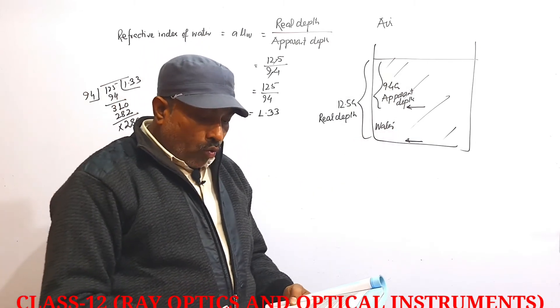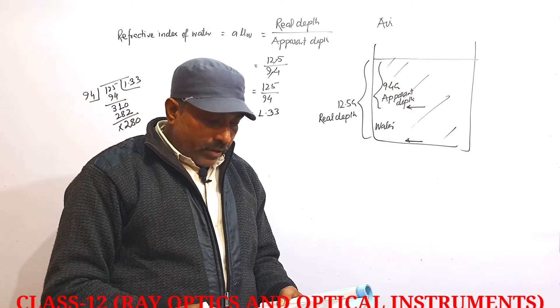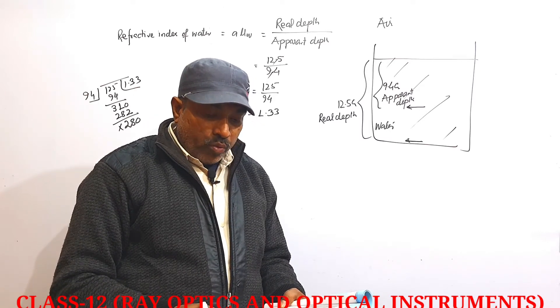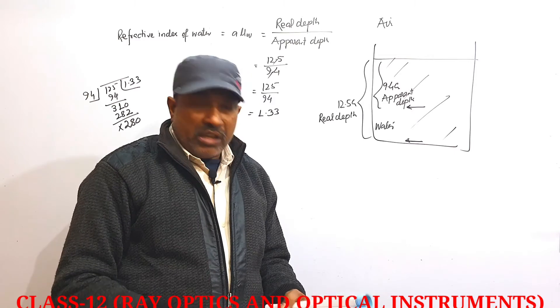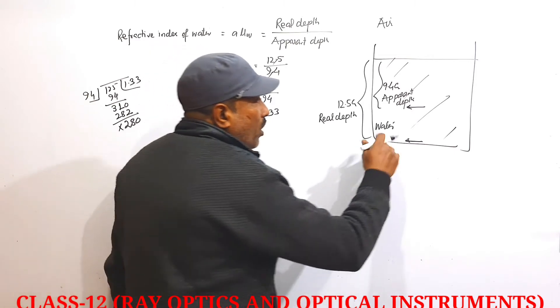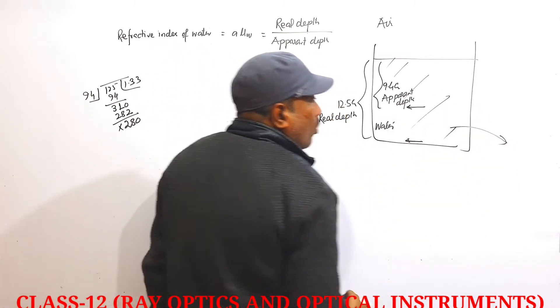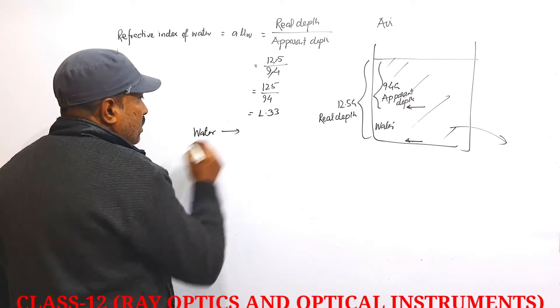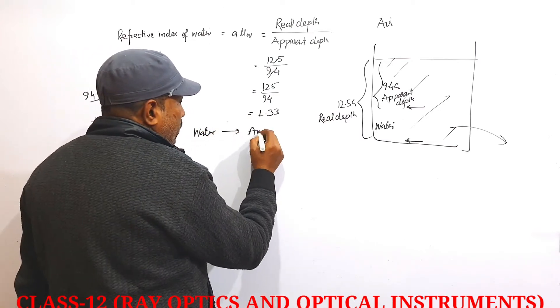Next question: What is the refractive index of the water if water is replaced by a liquid of refractive index 1.63 up to the same height? So we remove the water and replace it with another liquid.